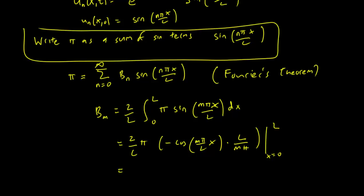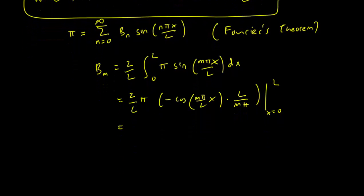We can then simplify all the constants and we just end up with 2 over M. The pi's cancel out, the L's cancel out and we just have 2 over M over there. And we just have minus cosine(m pi x over L) going from x equals 0 to L.